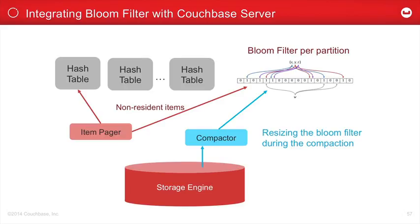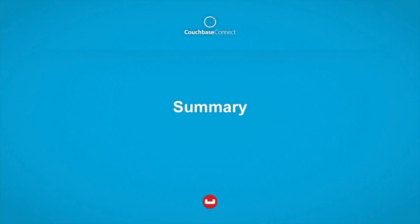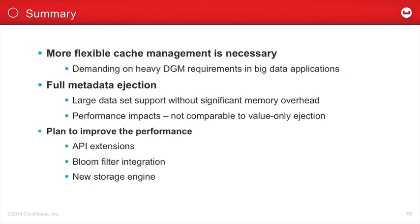That's our current plan — Bloom Filter integration will most likely be available in the next release to reduce disk value lookup overhead. In summary, today I presented the new cache management introduced in Couchbase Server 3.0: full metadata ejection. It allows you to store a huge amount of data without significant memory overhead, but it does have a performance impact. Our plans to address performance include: API extensions for asynchronous operations, Bloom Filter integration, and a new storage engine. Tomorrow I'm going to present ForestDB, which is our next-generation storage engine for Couchbase Server, currently in beta.